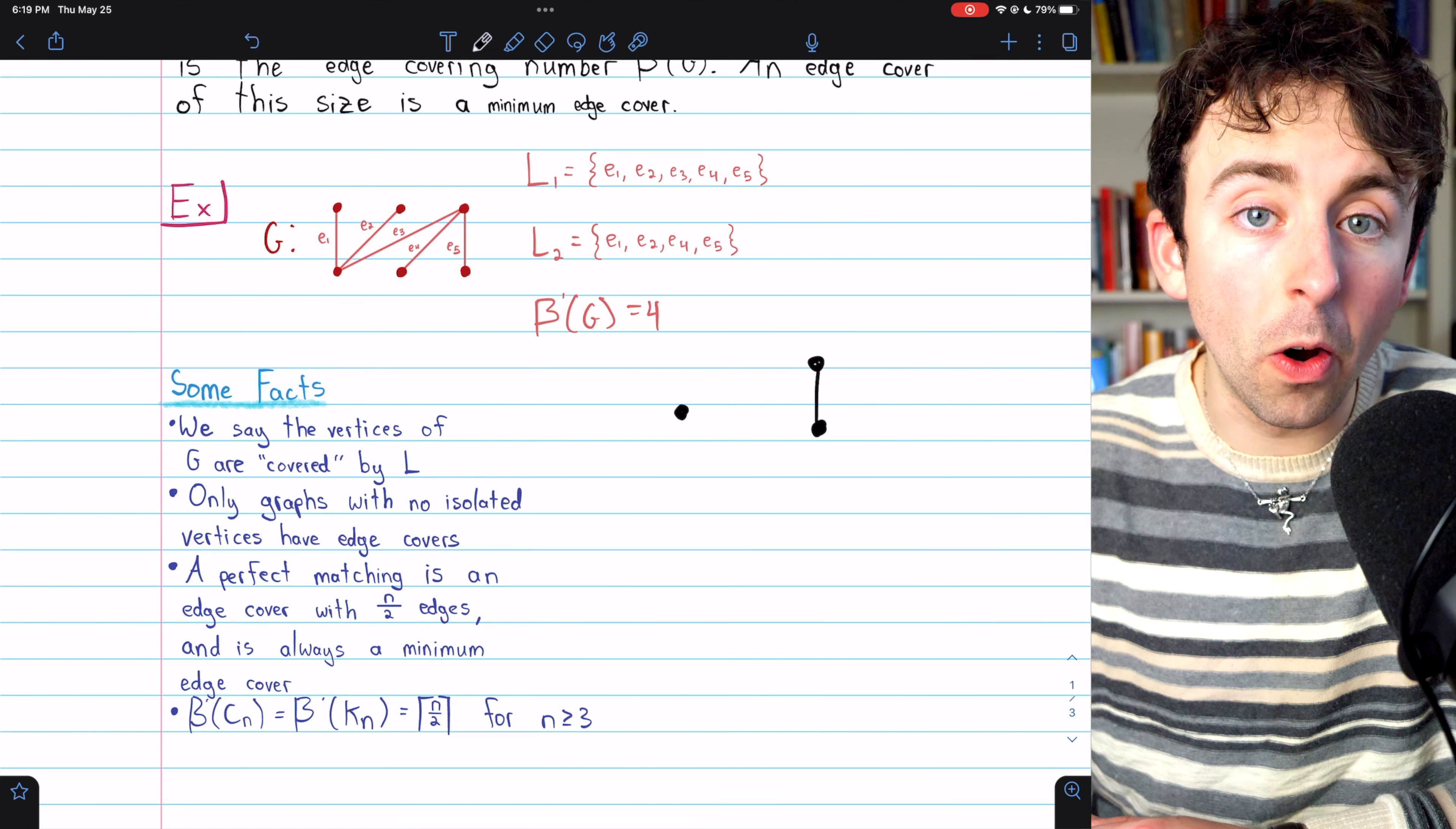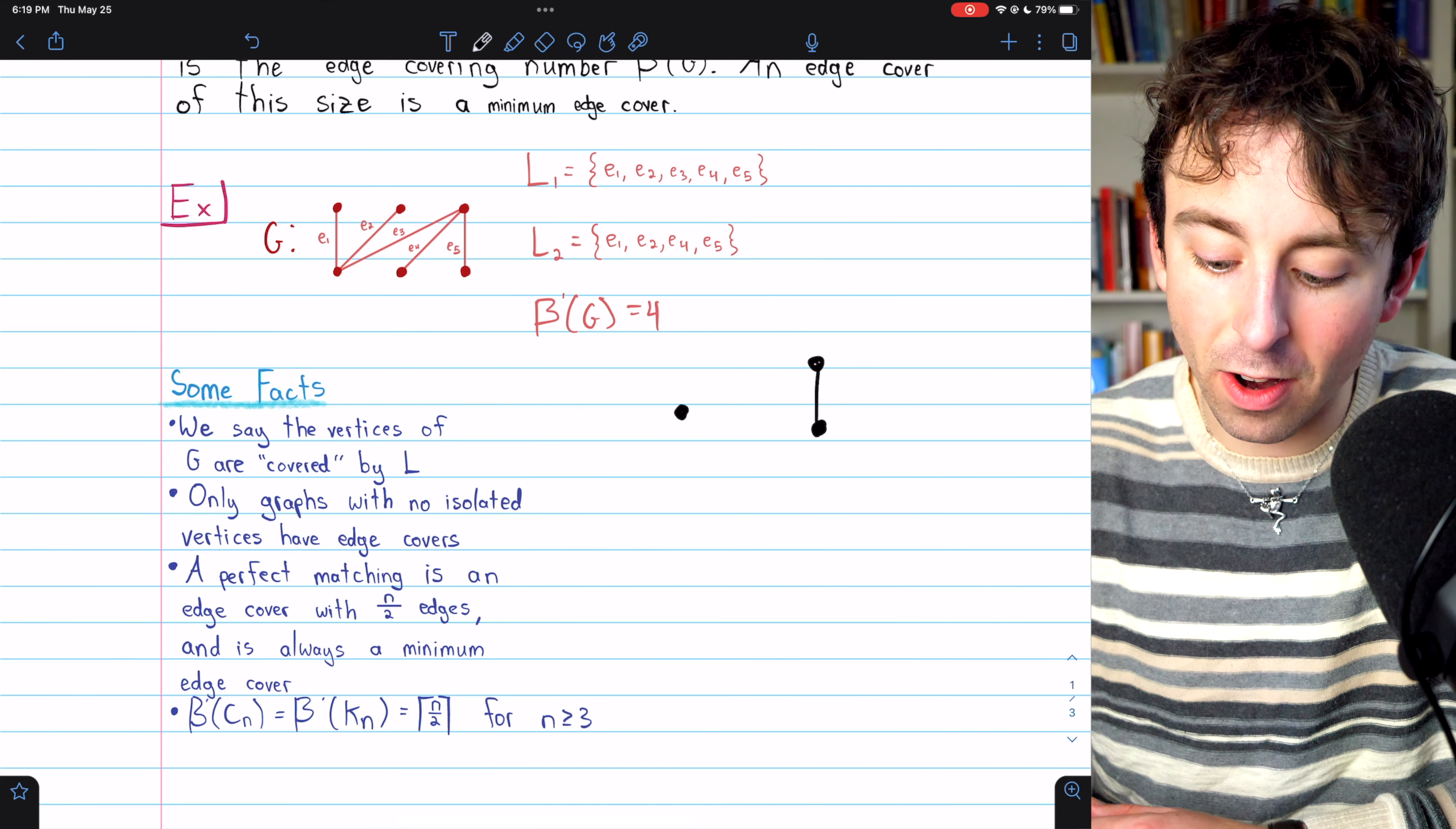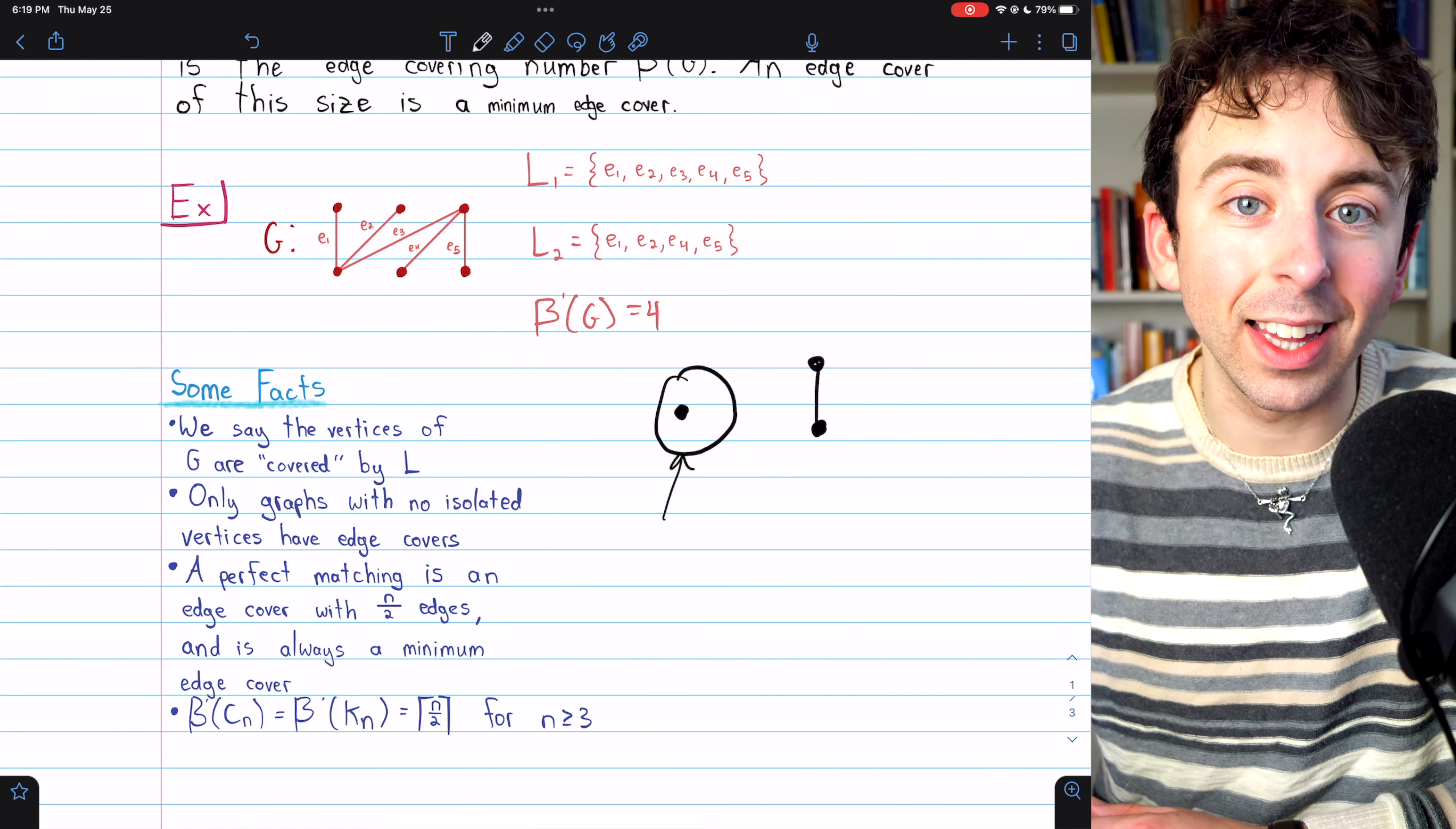So a graph like this, for example, has no edge cover. There just is not a way to cover that isolated vertex.